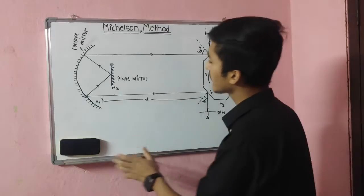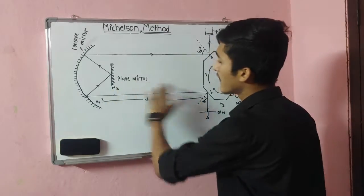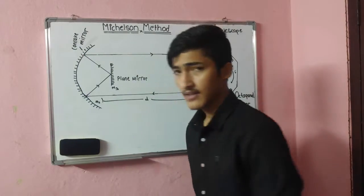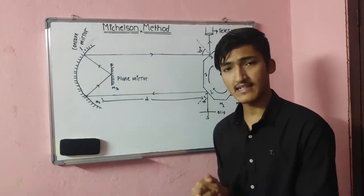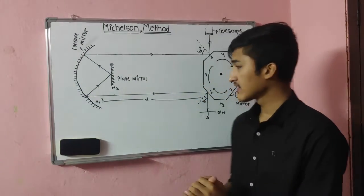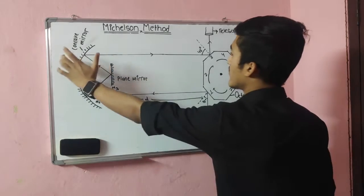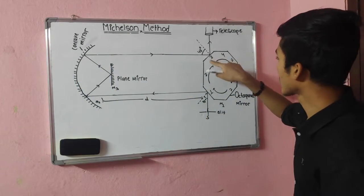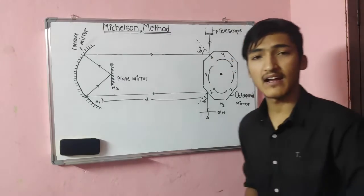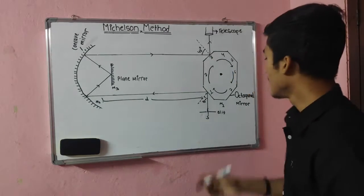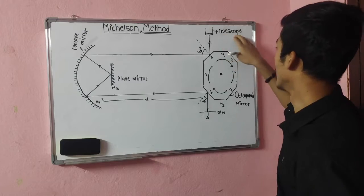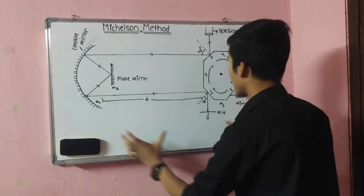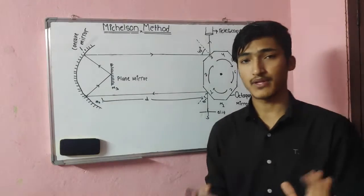He also placed the plane mirror M3 in the focal plane of the concave mirror so that multiple reflections take place, and the light can finally return to the octagonal mirror, incident on another face at an angle of 45°, so that the image of the source can be seen through the telescope. This is the experimental arrangement of the Michelson method.